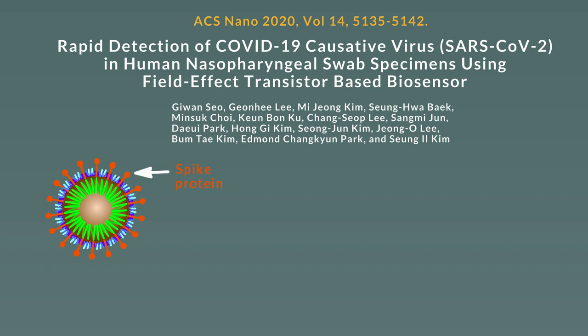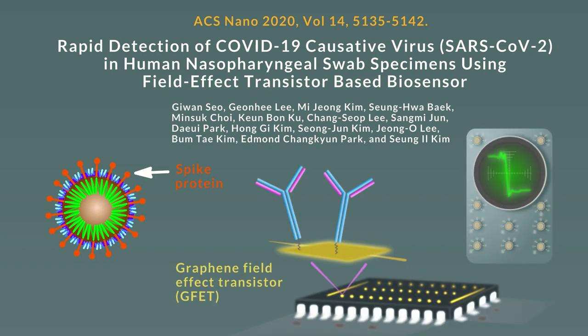The graphene field effect transistor, or GFET, was derivatized with antibodies for the spike protein. This discovery is a marriage of several disciplines, including electronics, nanofabrication, chemistry, and virology, to address a pressing medical need. Let's take a closer look at how they did this.